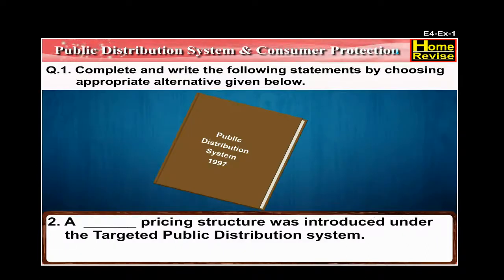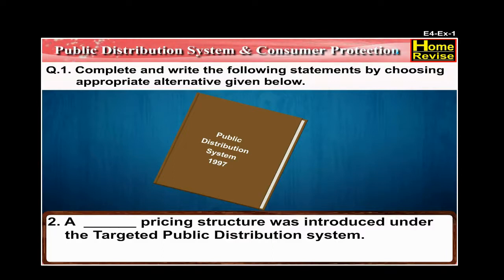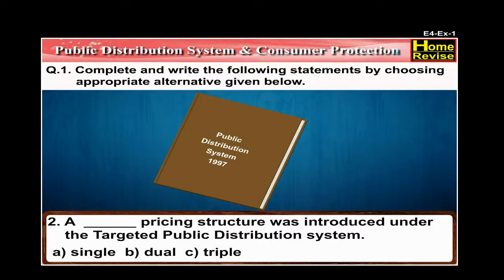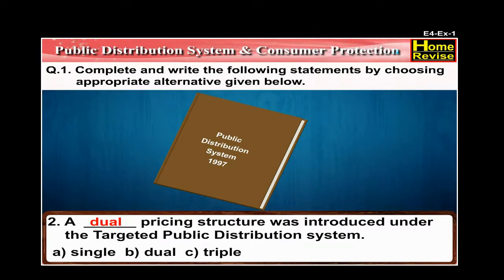Number 2: A dash pricing structure was introduced under the targeted public distribution system. Options are Single, Dual, or Triple. The answer is: a dual pricing structure was introduced under the targeted public distribution system.